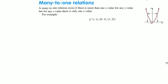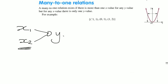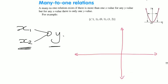A many-to-one relationship exists where two or more x values will generate exactly the same y value. So that's many x values generating one y value. Many of the graphs we've seen so far, especially the quadratics and quartics, are examples of many-to-one relationships.